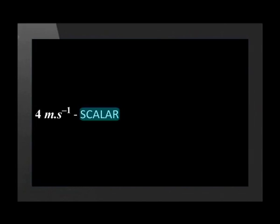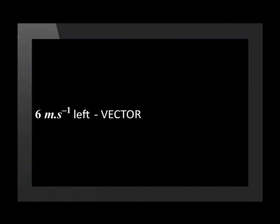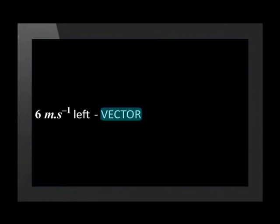In fact, 4 meters per second is a measurement of speed. Example 4 is 6 meters per second left. This has a magnitude of 6 meters per second and a direction of left, so it is a vector quantity and a measurement of velocity.